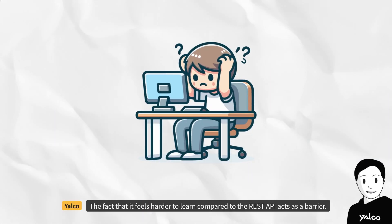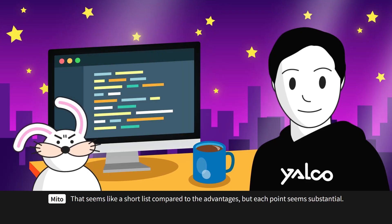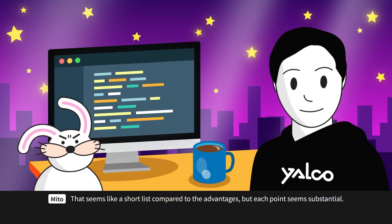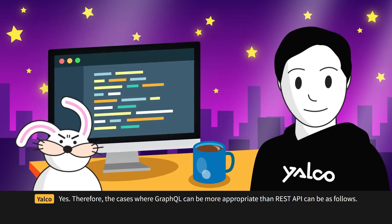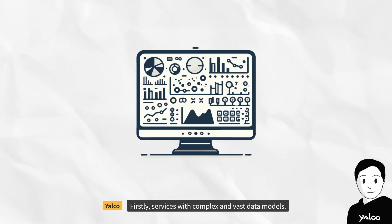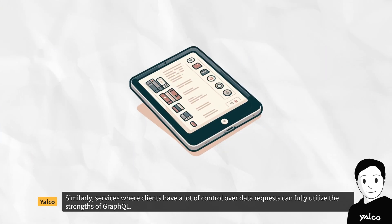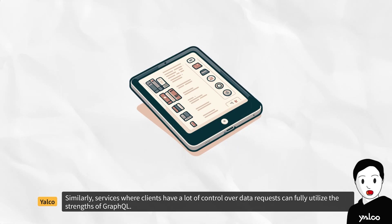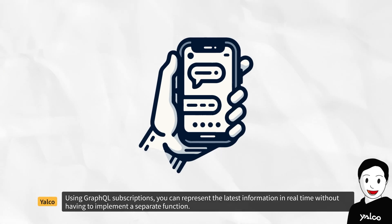The third disadvantage is the learning curve — it feels harder to learn compared to REST API, which acts as a barrier. Therefore, GraphQL can be more appropriate than REST API in these cases: services with complex and vast data models where overhead from over-fetching and under-fetching is large; services where clients have a lot of control over data requests; and services requiring real-time reactions to data updates, where GraphQL subscriptions let you represent the latest information in real-time without implementing a separate function.